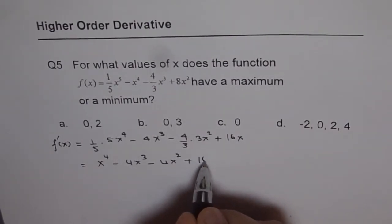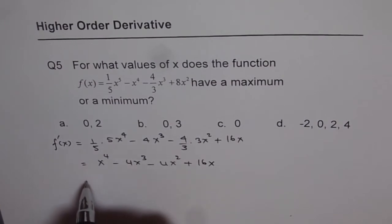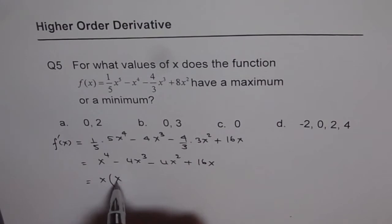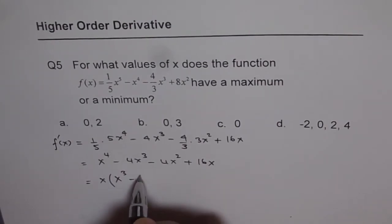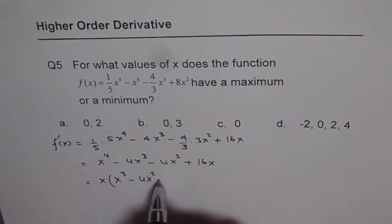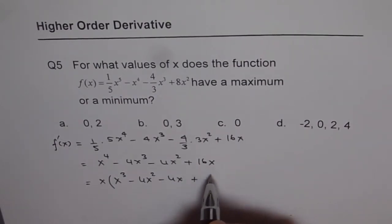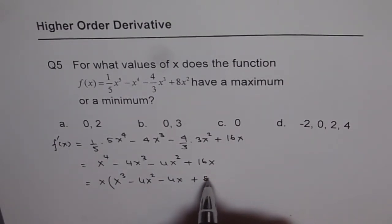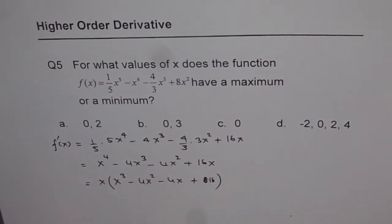We can factor out x at least, and then we are left with x^3 - 4x^2 - 4x + 16. So we just factor out x from here. This is what we get.